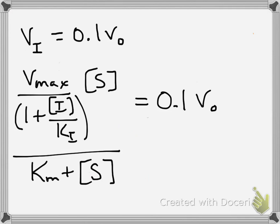So this gives us Vmax over 1 plus I over Ki times S over Km plus S equals 0.1 times the normal initial velocity. So what I'm going to do next is I'm going to plug in...